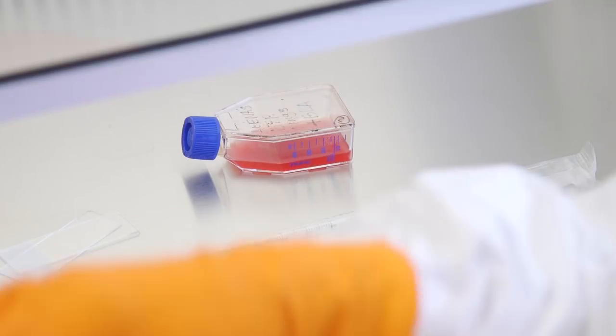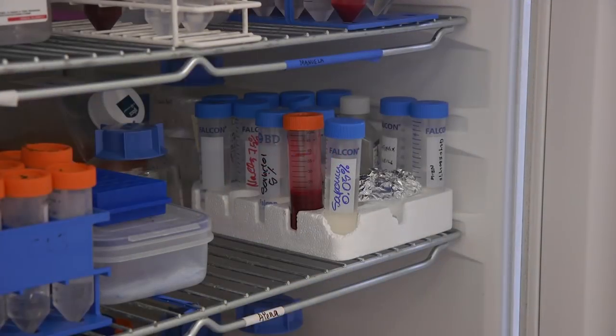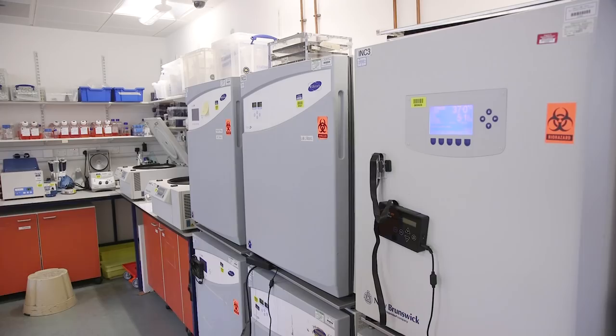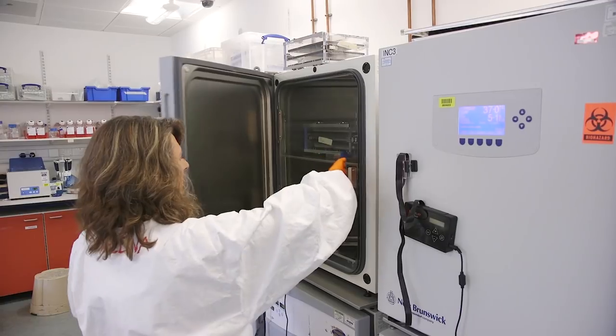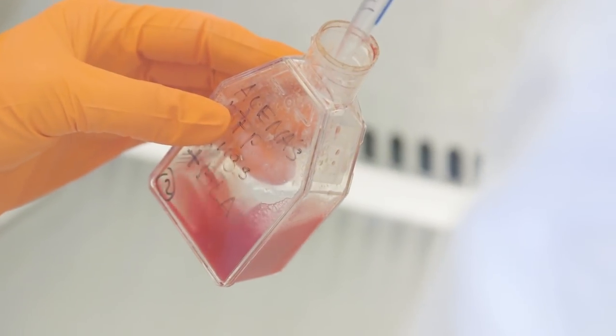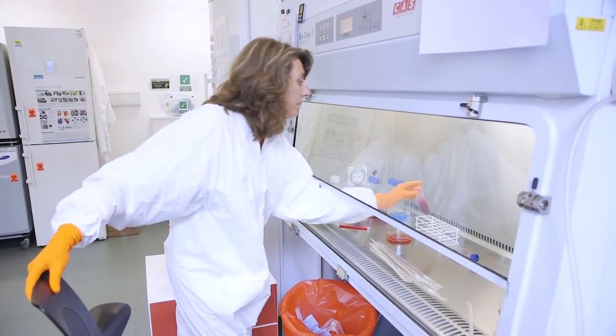We culture the parasite in plastic flasks and petri dishes using blood from the NHS blood and transfusion centre. Malaria parasites need special conditions to grow in the lab: a specific mix of gas, a 37 degree environment to mimic body temperature, and a fresh supply of blood.